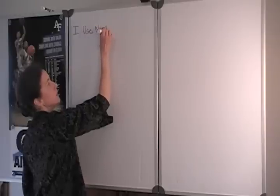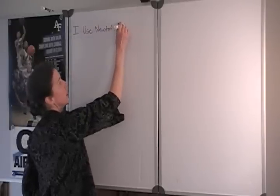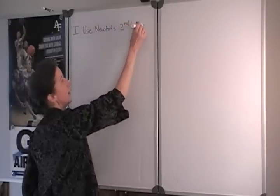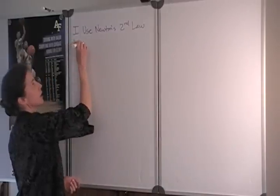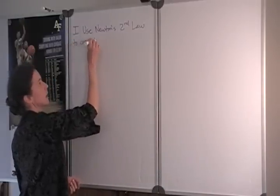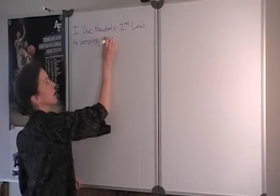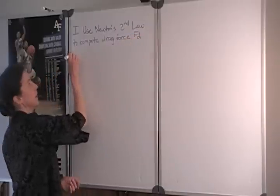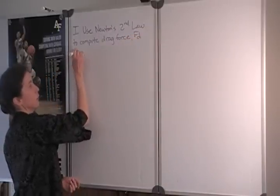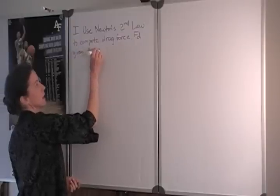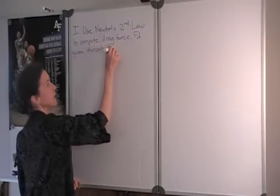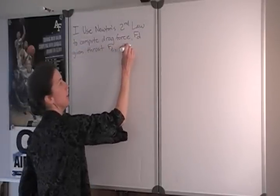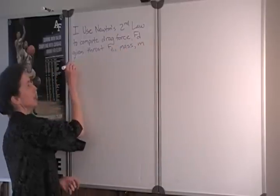So we're going to use Newton's second law to find that drag force. Let's call it F sub D. Given the thrust, let's call that force F sub T, the mass of the boat M, and the acceleration.